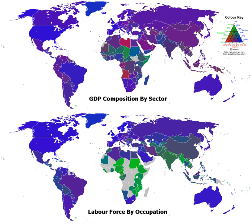The Industrial Revolution, from the mid-18th century to the mid-19th century, saw the development and popularization of mechanized means of production as a replacement for hand production. The Industrial Revolution played a role in the abolition of slavery in Europe and in North America.